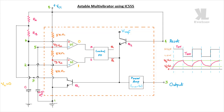In this case, S is equal to 1 and R is equal to 0. At the flip-flop output, Q will be equal to 1 and Q' will be equal to 0. Q1 input is 0. With the power amplifier, the output is 1. So in the initial stage, the output is 1.